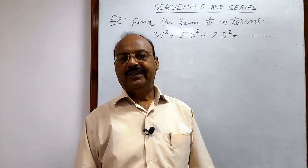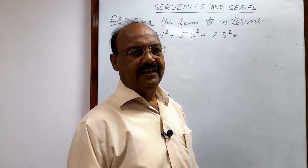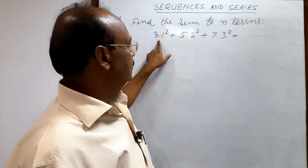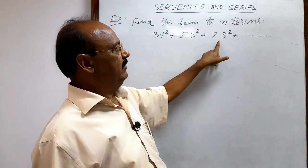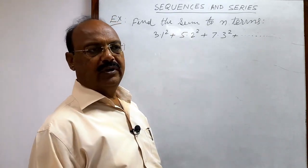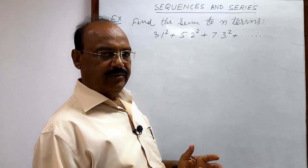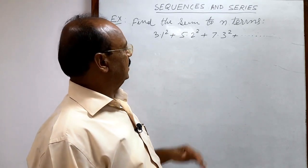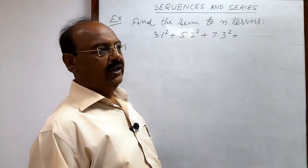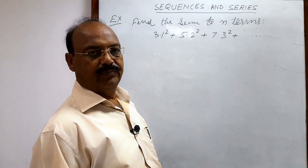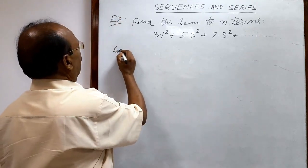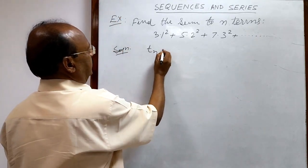Here we are seeing a question from the topic sequences and series. The question is: find the sum to n terms of the series 3 into 1 square plus 5 into 2 square plus 7 into 3 square and so on. In this type of question, first of all we have to recognize the pattern of the series, so that we can get the nth term.